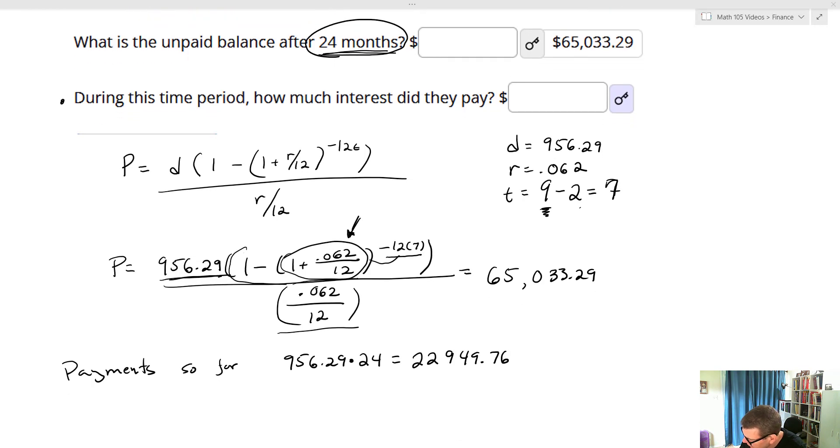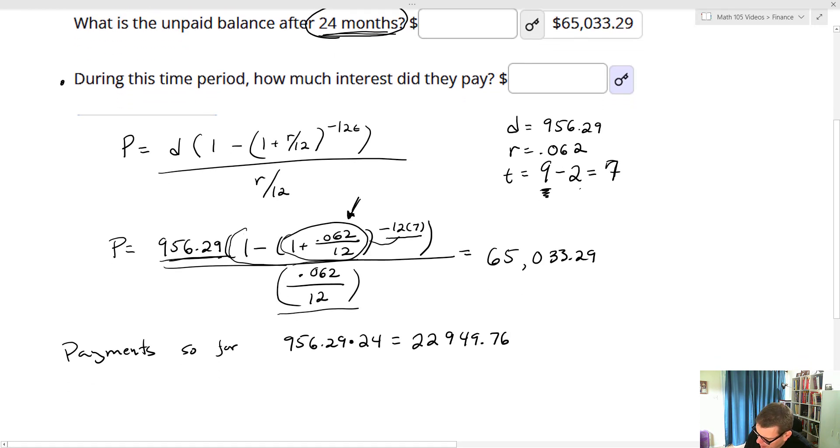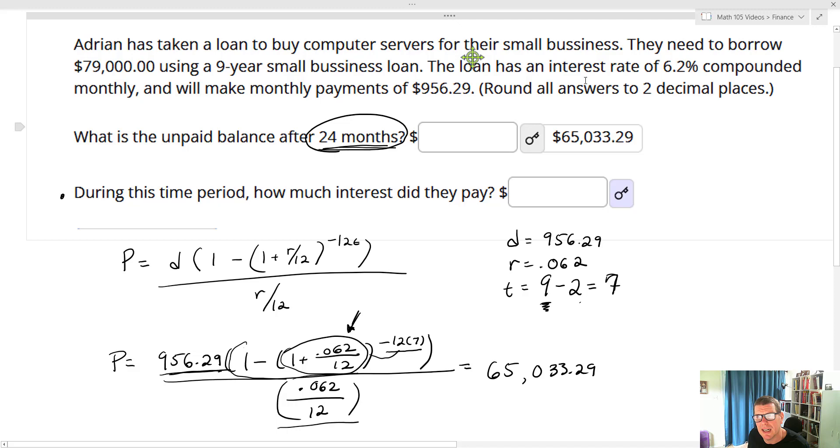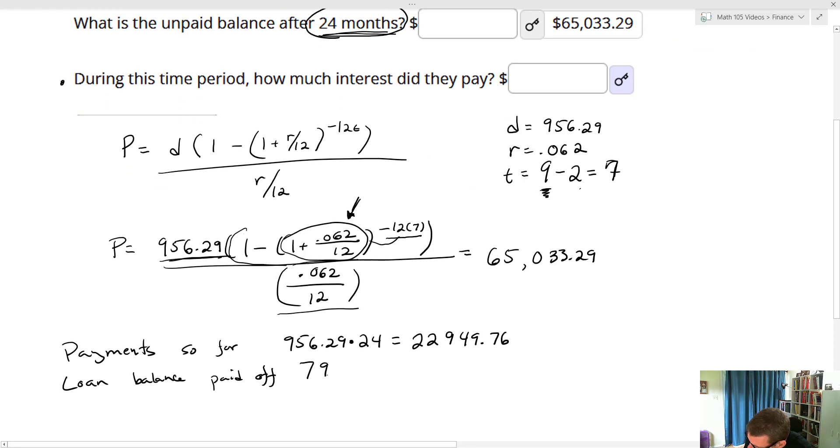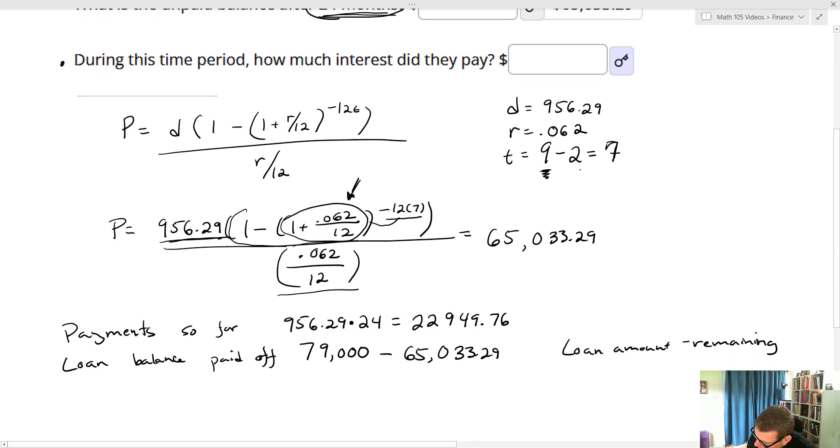Now, the next piece here is I need to figure out how much of my loan balance have I actually paid off. So loan balance paid off. That's going to end up being, well, my original loan, we'll take a look, is $79,000. And we're going to subtract from that what's remaining, $65,033.29. So loan amount minus the remaining. And that should tell you how much you still have to pay. Seems to make some sense. And so that's going to end up equaling $13,966.71.